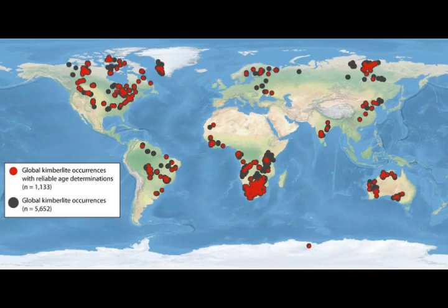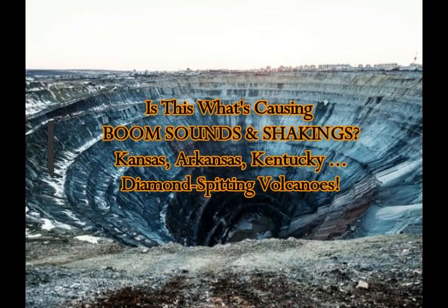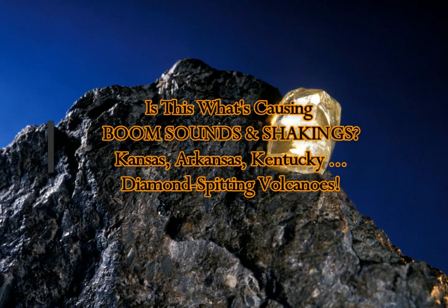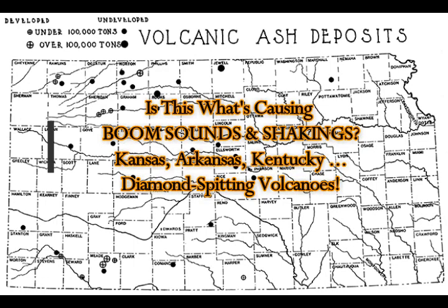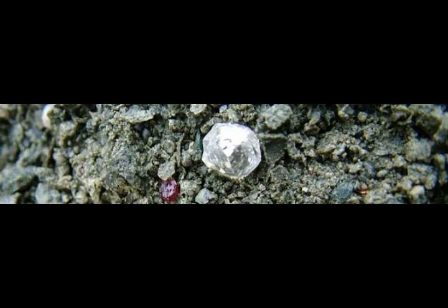Kansas, Arkansas, Kentucky. Diamond-spitting volcanoes — is this what's causing the earthquakes and jolts in the central United States? In the previous video we saw the volcanic ash deposits over Kentucky and northwest volcanoes there. We also saw garnets at the seven o'clock position underneath the diamond. These are the types of gems we're getting from these volcanoes — they're not lava-spitting volcanoes, they're diamond-spitting volcanoes, along with precious stones like garnets.